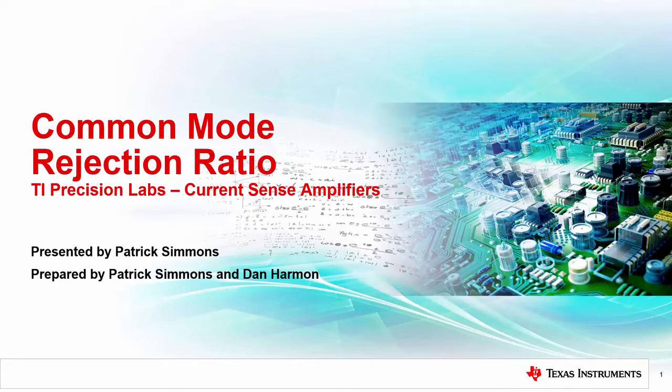Hello, and welcome to the TI Precision Lab series on current sense amplifiers. My name is Patrick Simmons, and I'm an applications engineer in the current sensing and position sensing product line. In this video, we will introduce common mode rejection ratio, abbreviated as CMRR, how to calculate the error it produces, and how to minimize the related error.